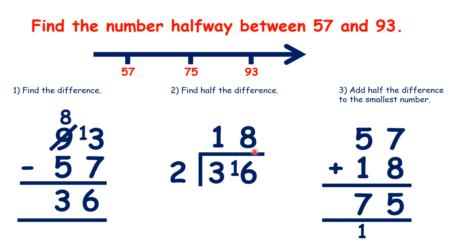So we can take away 18 from 75 to get 57 and we can add 18 to 75 to get 93.